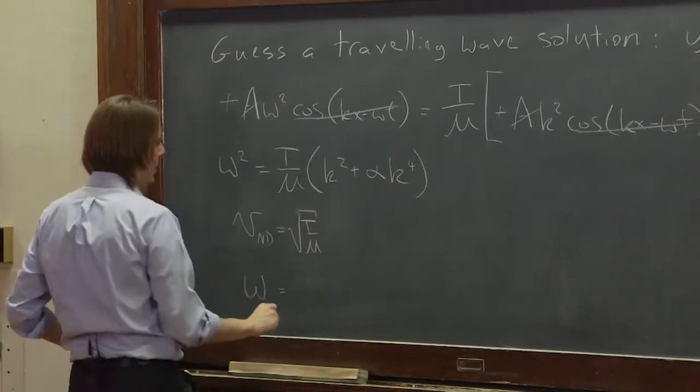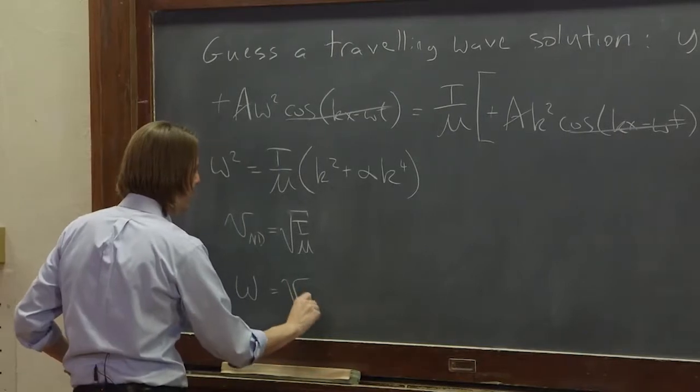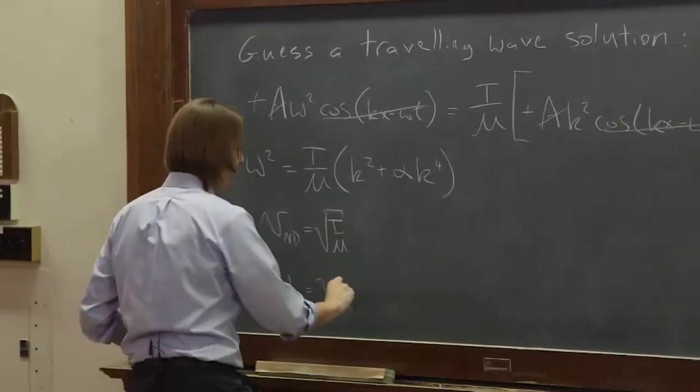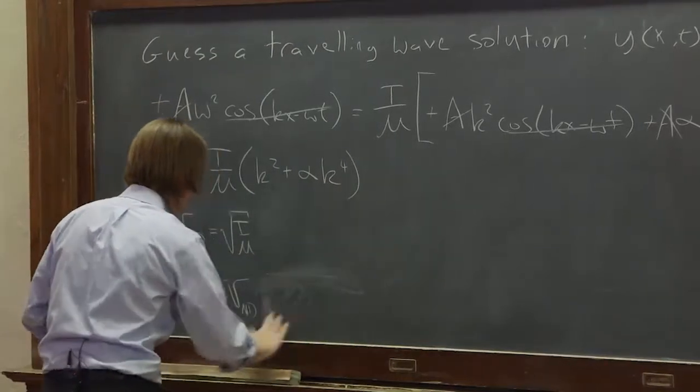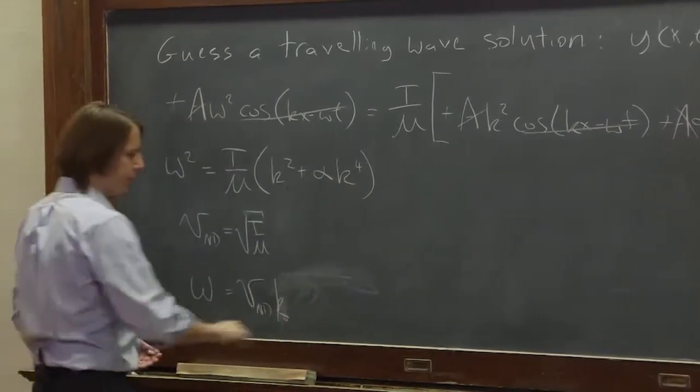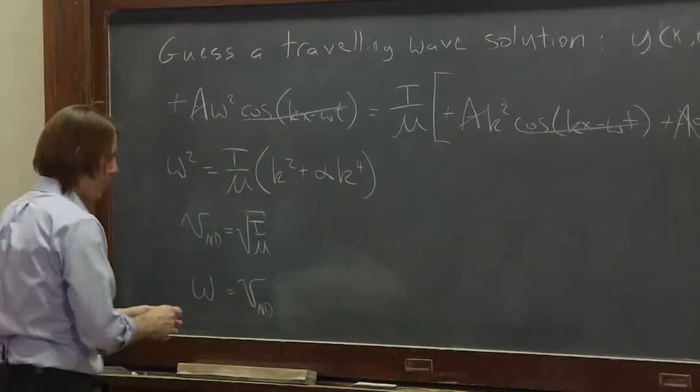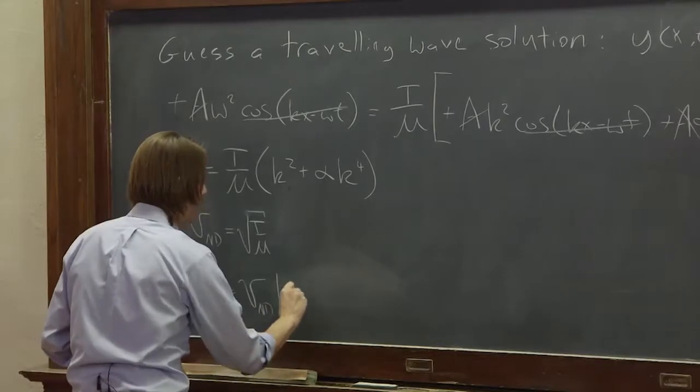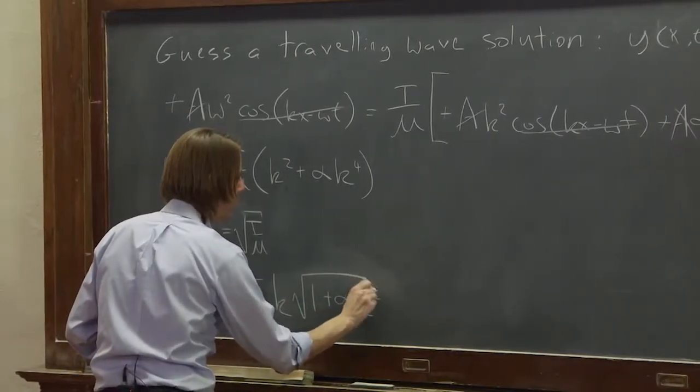you could get that omega is v, the non-dispersive velocity that we used to talk about, times k times the square root of 1 plus alpha k squared.